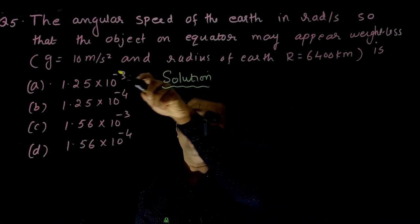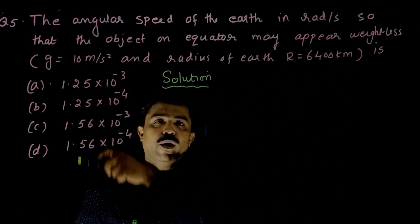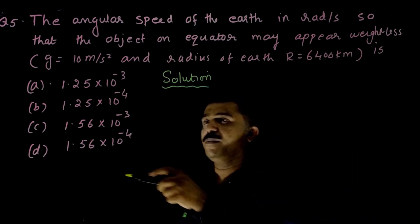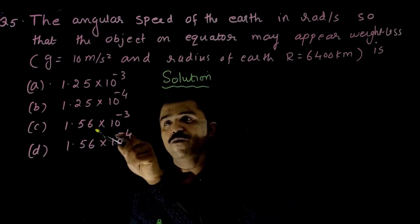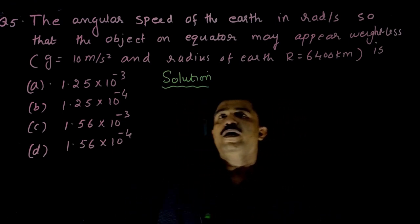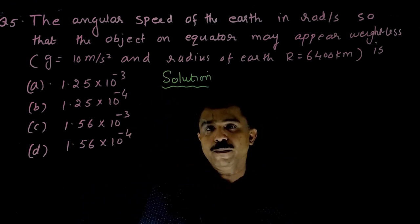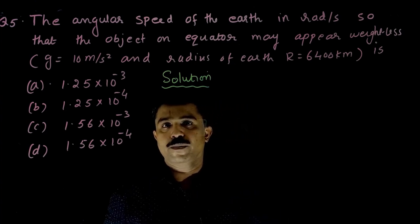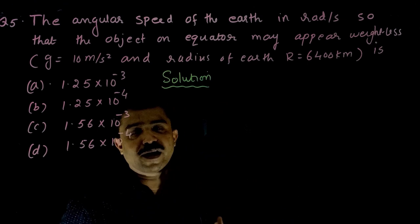Question 5: The angular speed of the earth in rad/s so that an object on the equator may appear weightless, given g = 10 m/s² and radius of earth R = 6400 km. Options: A) 1.25×10⁻³, B) 1.25×10⁻⁴, C) 1.56×10⁻³. We have to find the angular velocity at which the weight of a body at the equator becomes zero, meaning acceleration due to gravity at the equator becomes zero.